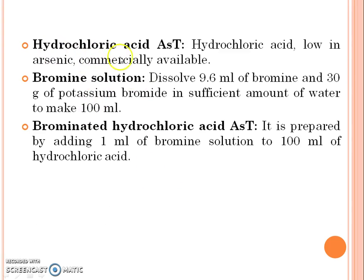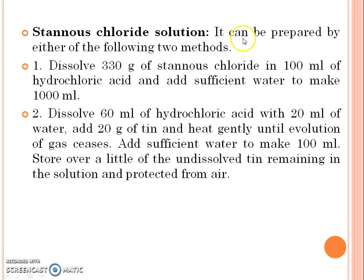Methods for preparation of reagents: Hydrochloric acid low in arsenic is commercially available. Bromine solution: dissolve 9.6 ml of bromine and 30 g of potassium bromide in sufficient water to make 100 ml. Brominated hydrochloric acid: prepared by adding 1 ml of bromine solution to 100 ml of hydrochloric acid. Stannic chloride solution can be prepared by either of two methods: dissolve 330 g of stannic chloride in 100 ml of hydrochloric acid and add sufficient water to make 1000 ml; or dissolve 60 ml of hydrochloric acid with 20 ml of water, add 20 g of tin, and heat gently until evolution of gas ceases, then add sufficient water to make 100 ml.